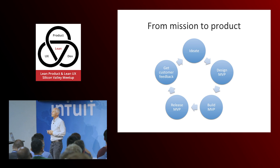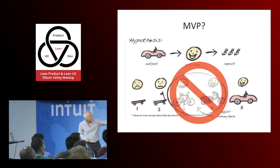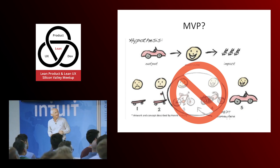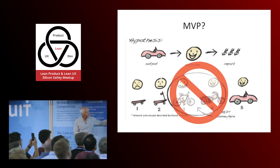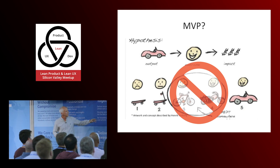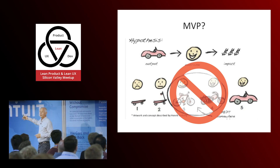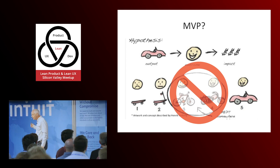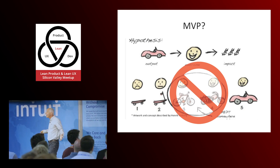I was researching for this talk and Googled 'minimum viable product car.' A slide came up where the idea is a car, and the MVP they're suggesting is a bicycle or motorcycle — and then presumably you iterate until you get to the final product. I'm one of the few people on earth who has actually done this exercise. This does not work. I can just tell you, that is not going to be a solution.